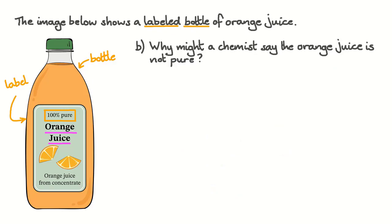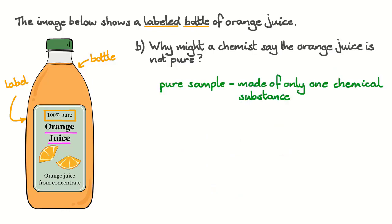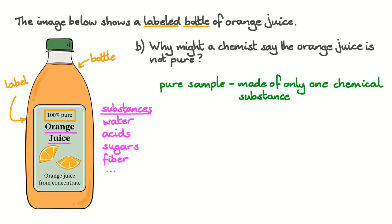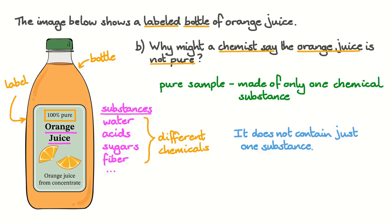Why might a chemist say that the orange juice is not pure? To a chemist, the word pure has a more specific meaning — we use pure when referring to a sample that contains only one chemical substance. The substances inside orange juice include water, different types of acid, sugars, and depending on the type, there may be more or less fibre from the pulp. But this is only a short list of the many, many substances you might find in orange juice. All these substances are different chemicals, so orange juice is not a pure chemical. A chemist might say that the orange juice is not pure because it does not contain just one substance.